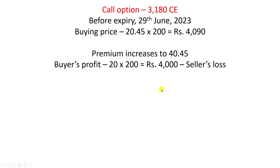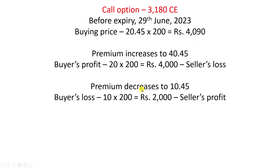Let us say that today you have bought the option at 20.45, and tomorrow the premium decreases to 10.45. The stock price did not move according to your expectation, and the next day the premium decreases to 10.45. So 20.45 minus 10.45 is 10 points. 10 into 200 is 2000 rupees — this will be the buyer's loss and the seller's profit. Of course, you will get the original premium back, but you will have a loss of 2000. So 4090 minus 2000 is 2090 rupees — totally you will get 2090 rupees back if you are an option buyer.